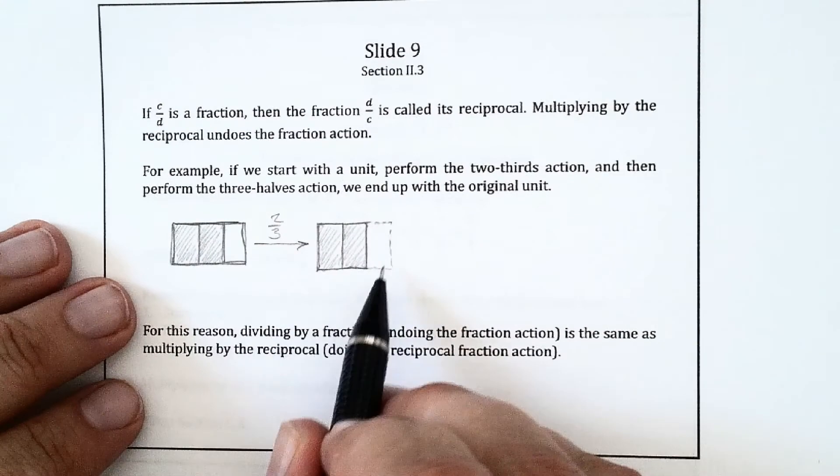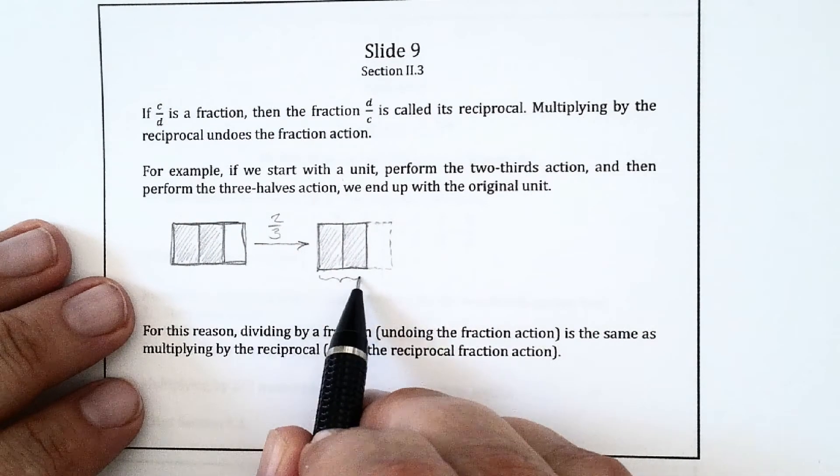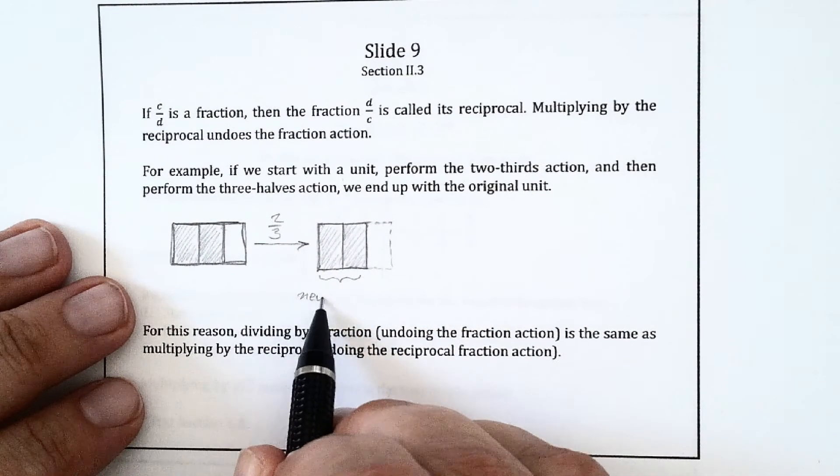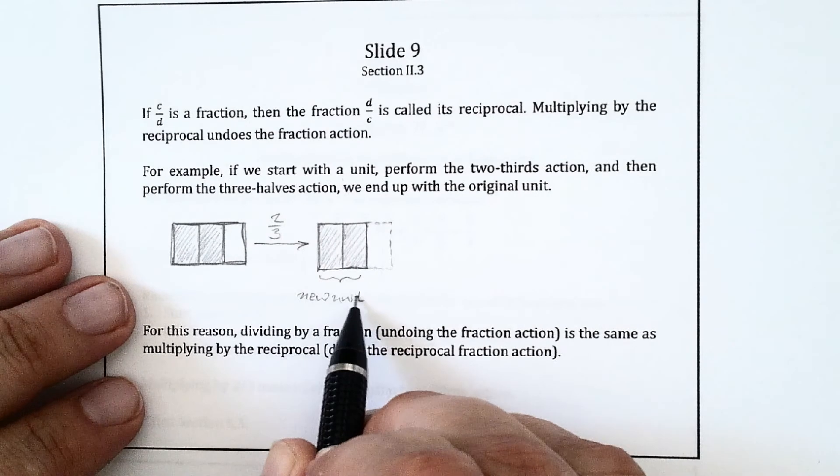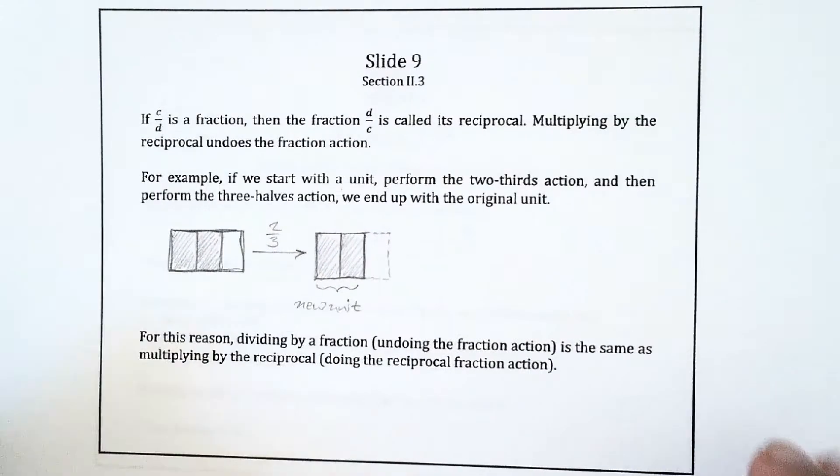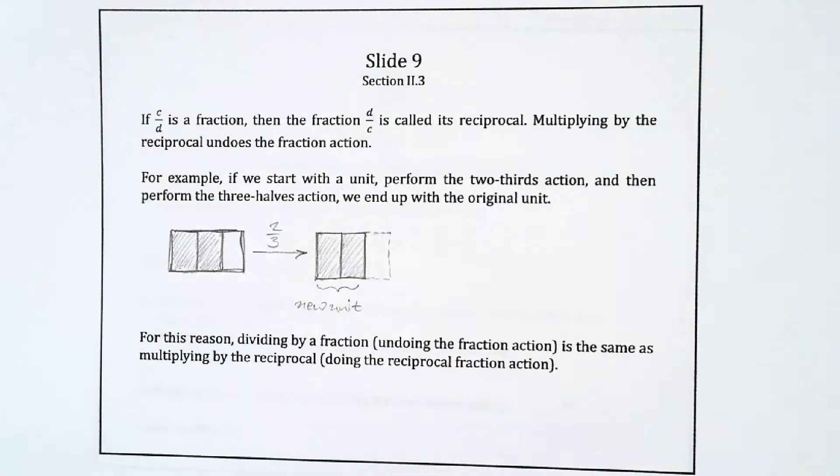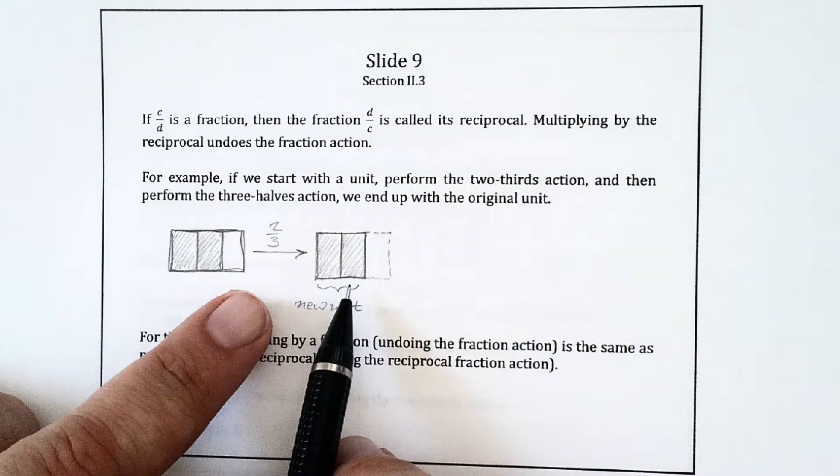I'm kind of trying to draw it where we can see what we lost. All right, so after we do the two-thirds action, we end up with this. So this thing right here, that's the new unit.